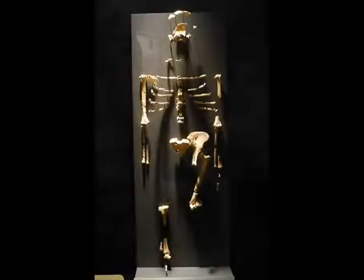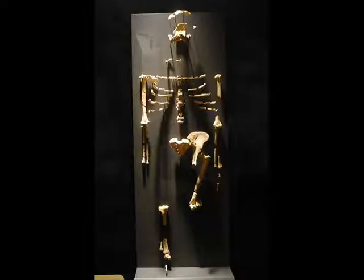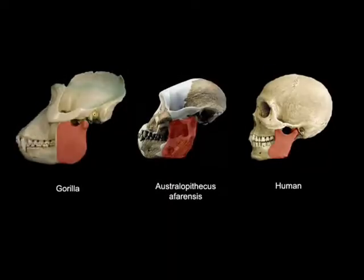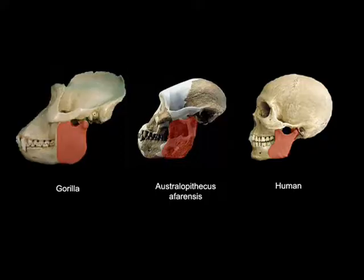Say hello to Australopithecus afarensis, another extinct hominid that you actually met a little while ago in one of the pictures comparing pelvises. This species is about 3–4 million years old and has some features of its skull that do reflect those of apes. The red highlighted area of the skull is known as the ascending ramus. Note how much wider and taller it is on gorillas and afarensis when contrasted to the ramus of the human skull.